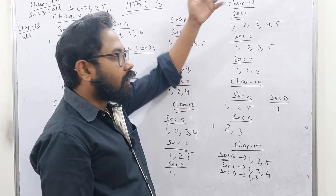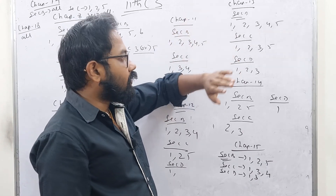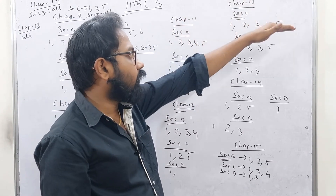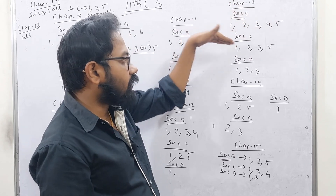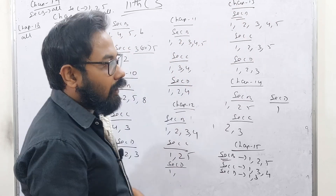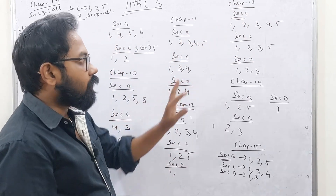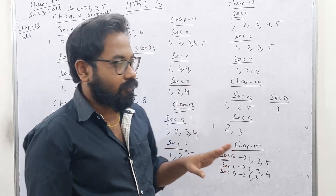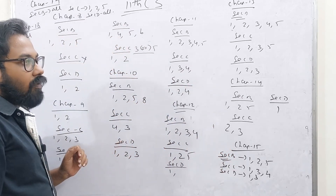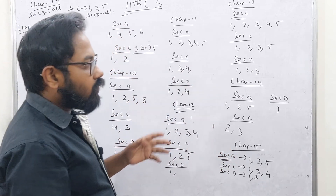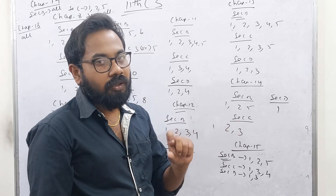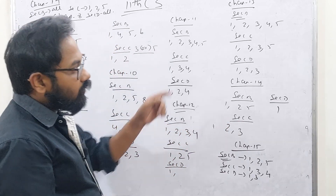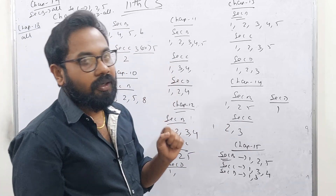Chapter 13 is theory — it's easy. Section B: 1, 2, 3, 4, 5. Section C: 1, 2, 3, 5. Section D: 1, 2, 3. Chapter 13 is theory — it's easy. If you look at object-oriented programming and procedural programming, it's a difference. If you look at 2-mark, 3-mark: 1, 2, 3.